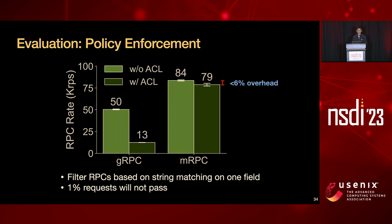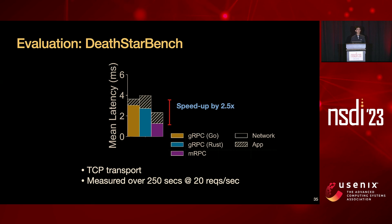We also evaluate how MRPC enforces policies. We mimic access control policies that filter out RPCs based on string matching on one field, with a traffic generator where 1% of requests will not pass. With gRPC and policies in play, the RPC throughput rate reduces significantly, whereas our approach introduces only 6% overhead. For our real-world benchmark — a standard benchmark for microservices — measuring mean request latency over time, compared to gRPC and its proxy solution, our approach speeds up end-to-end latency by 2.5 times.